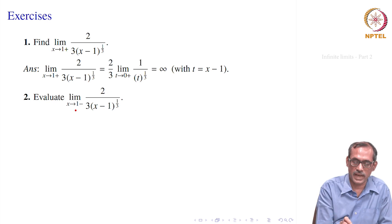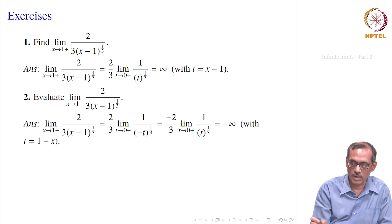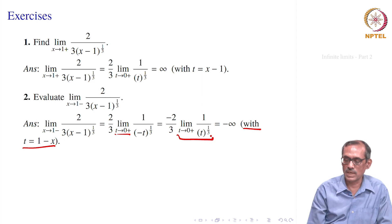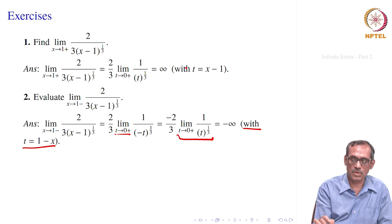The second exercise: evaluate the limit as x → 1- of the same function 2/[3(x-1)^(1/3)]. When x → 1-, x is smaller than 1, so x - 1 becomes negative. Substituting t = 1 - x keeps t positive going to 0+. Then (x-1)^(1/3) = (-t)^(1/3) = -t^(1/3), giving -(2/3) · lim_{t→0+} 1/t^(1/3), which equals -∞. So the limit is minus infinity.